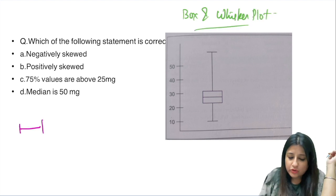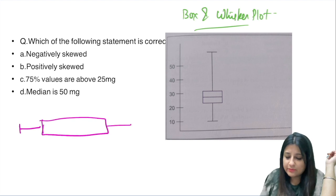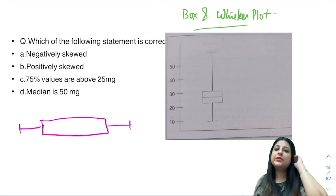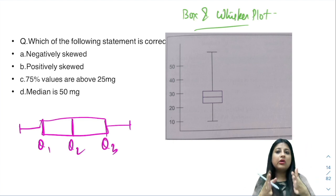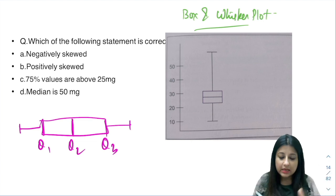I've taught you many times in classes that box and whisker plot is used to represent quartiles. This is Q1, this is the middle line which is Q2, and this is Q3. We all know Q2 divides the box into exactly two halves.